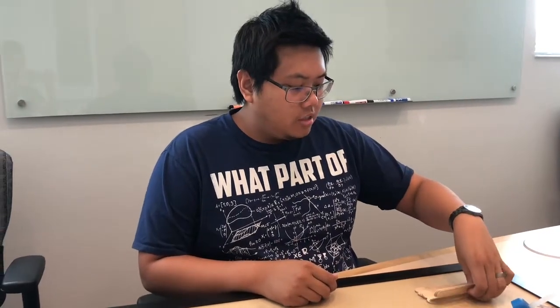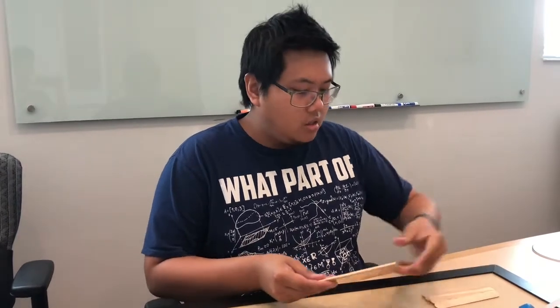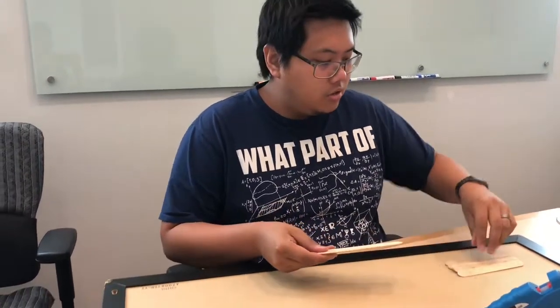Alright, so we're going to be building the catapult. To build the catapult, you start with the base, and you're going to take popsicle sticks here. You should have at least 11 popsicle sticks.